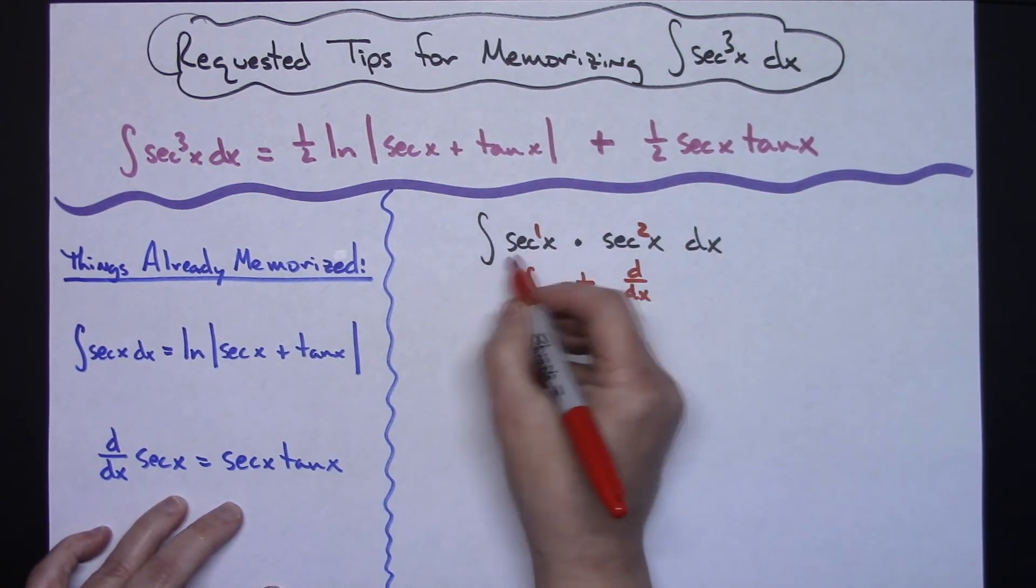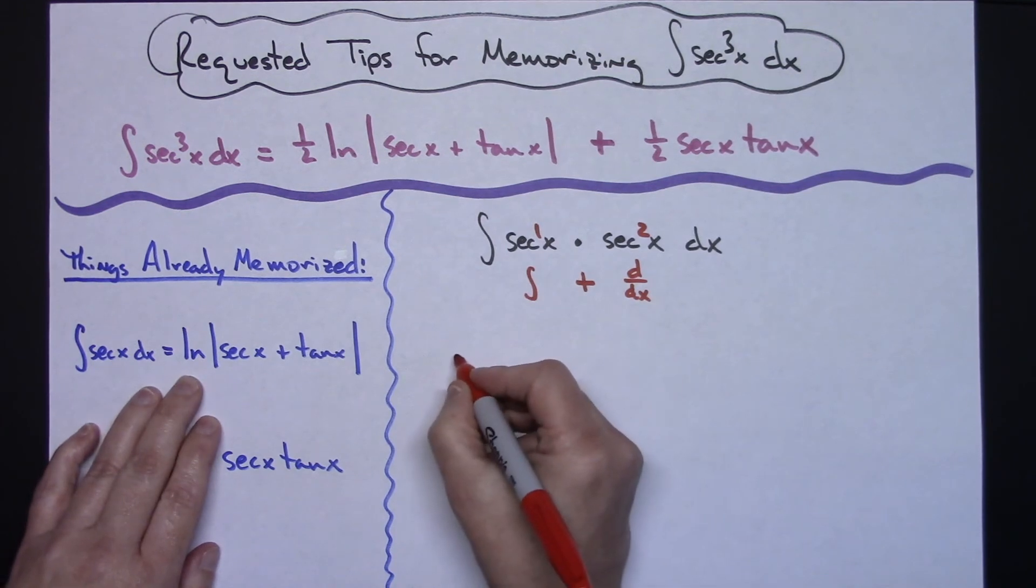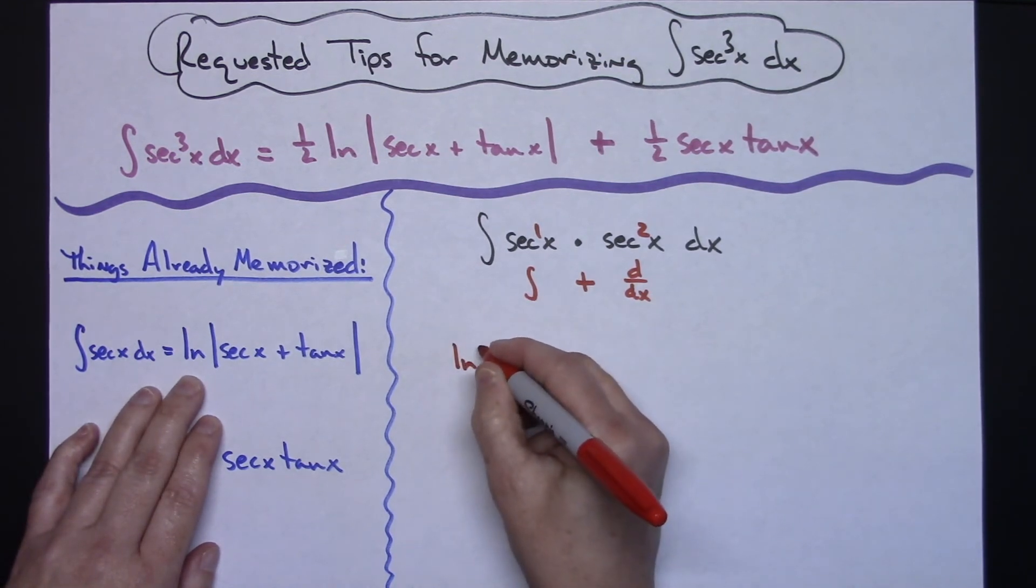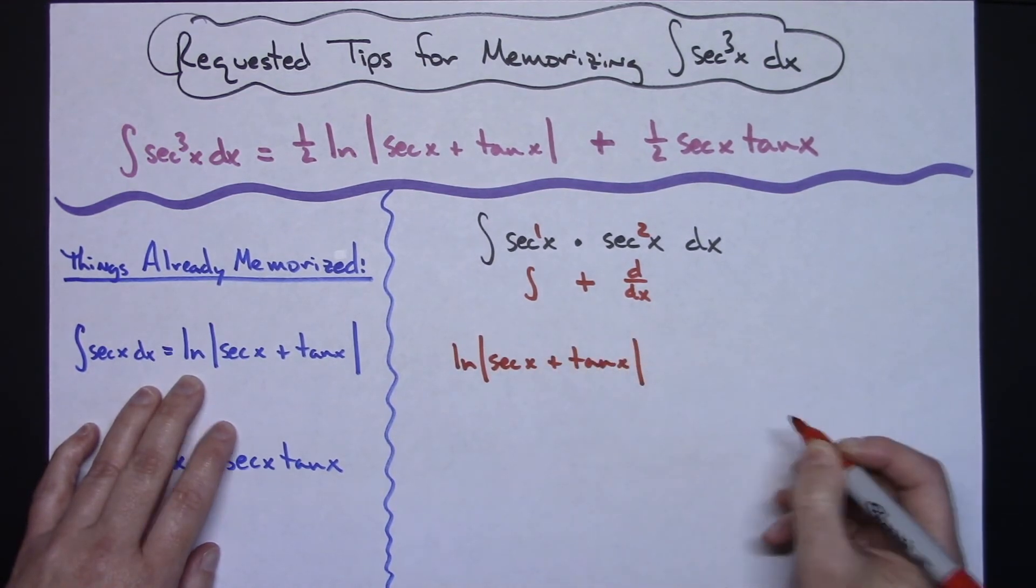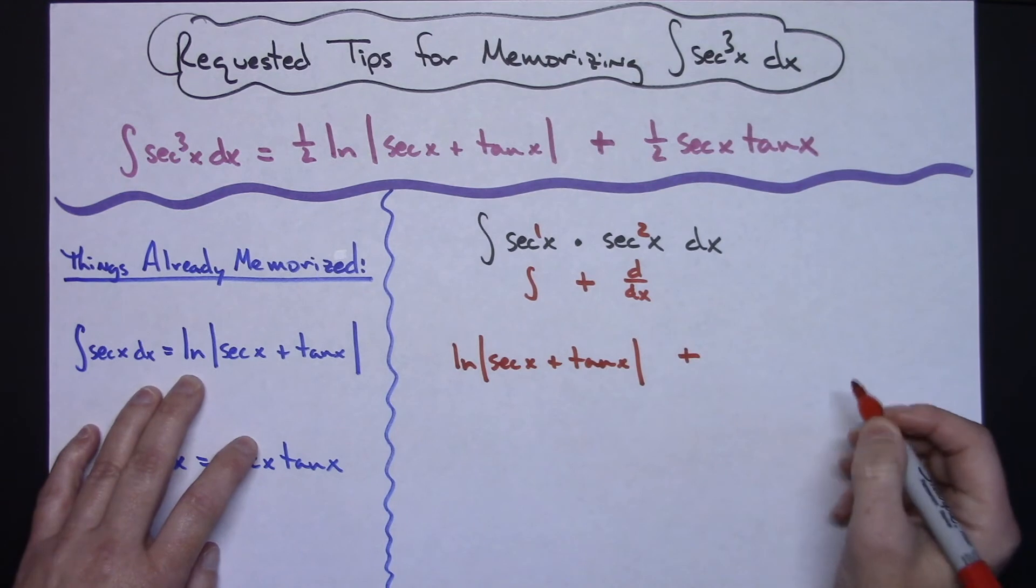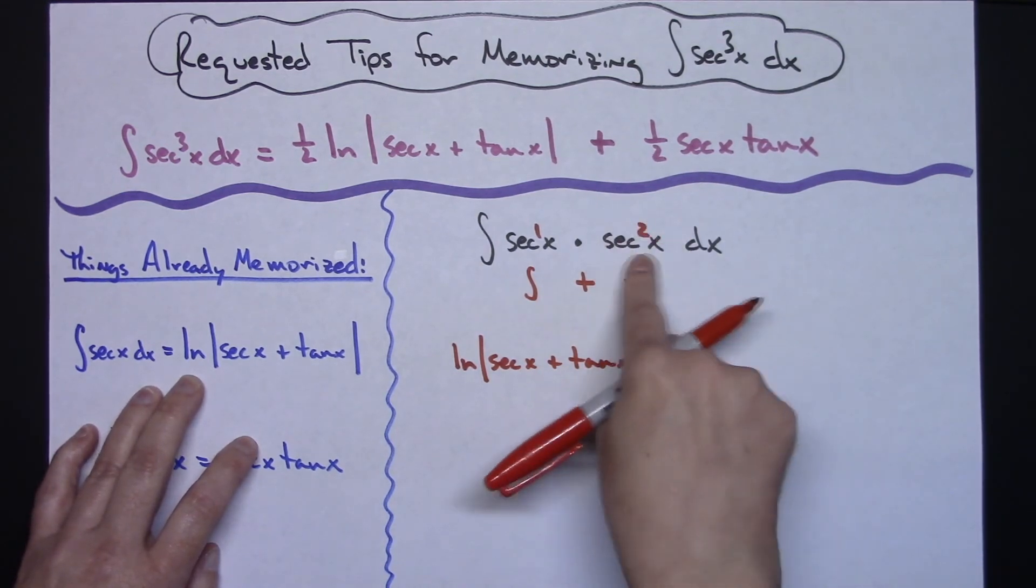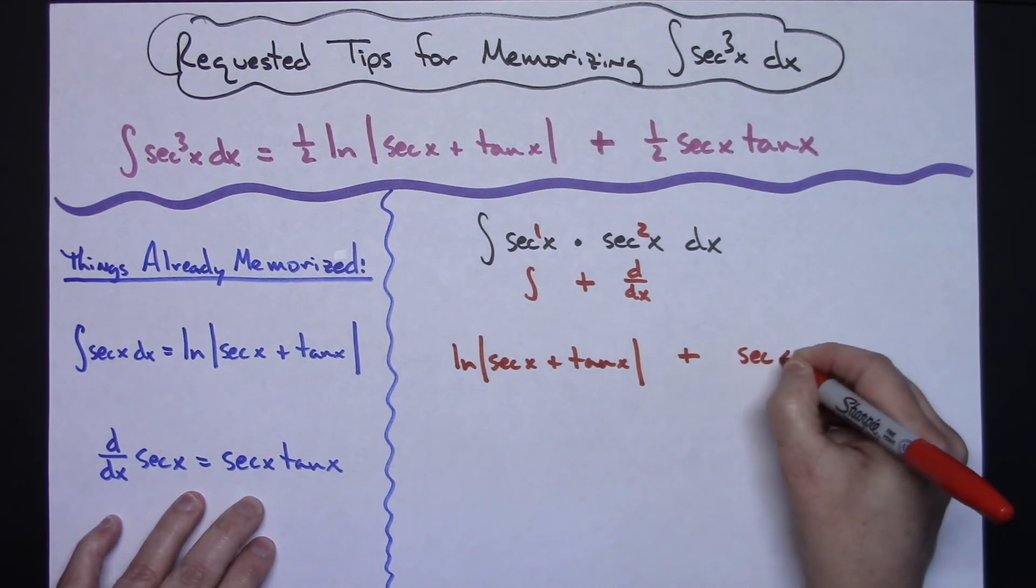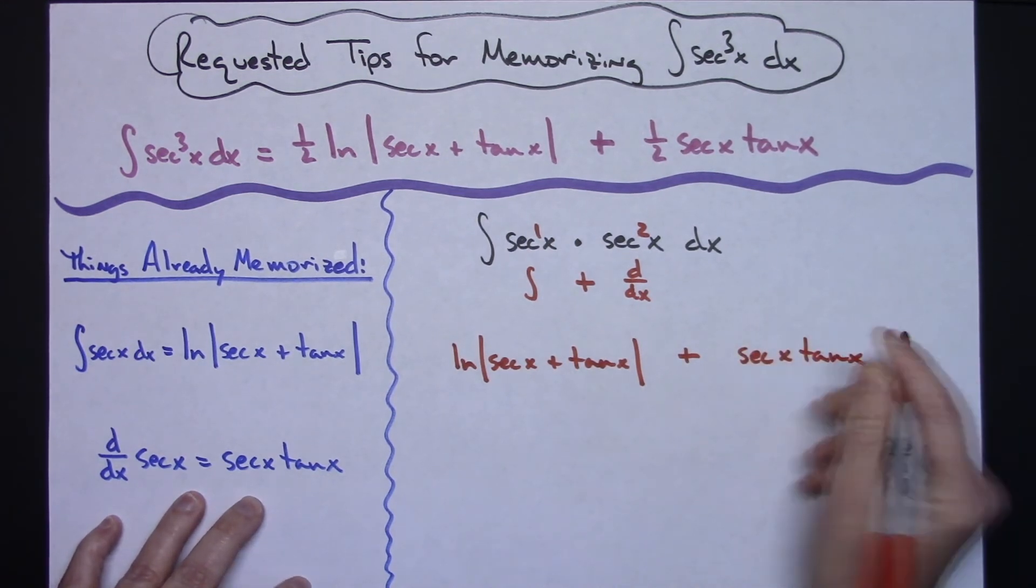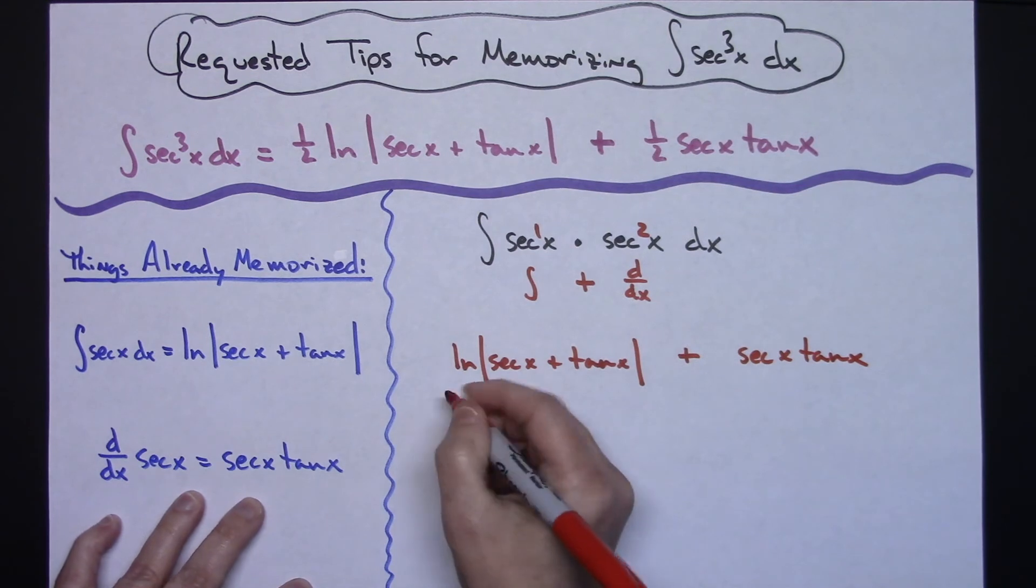So having the integral of secant x memorized, you would come up with the natural log absolute value secant x plus tangent x. You would automatically have the one half. And then thinking derivative of secant, not secant squared, just derivative of secant, then you do secant x tangent x. And then remembering the 1 and the 2 will help you remember the one half that goes out in front of both of them.